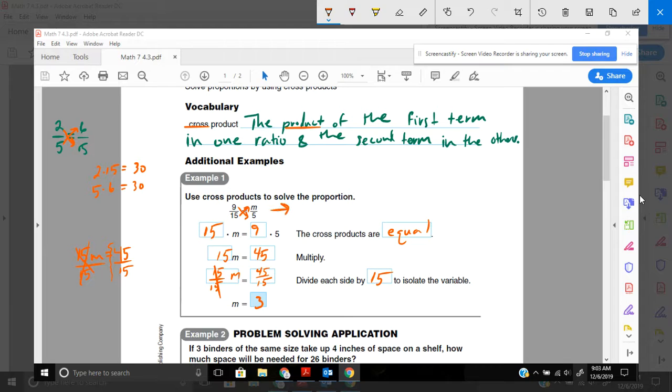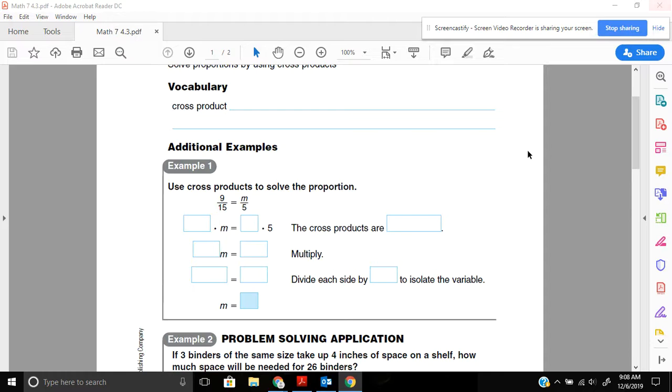So in the end, if you were to substitute that in, we would get 9 fifteenths is equivalent to 3 fifths. And if you really want to double check or even triple check, try to simplify this. Well, 9 and 15 both have 3 as a common factor. So if you divided 9 by 3, you get 3. If you divided 15 by 3, you get 5. So look at there, 3 fifths is equal to 3 fifths. This is the basics and this is really the most important part of this lesson.